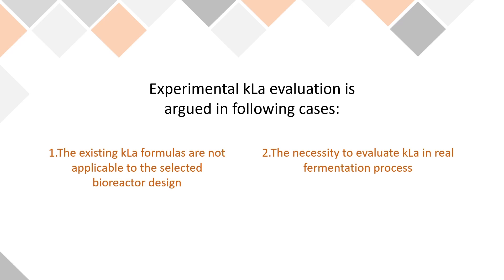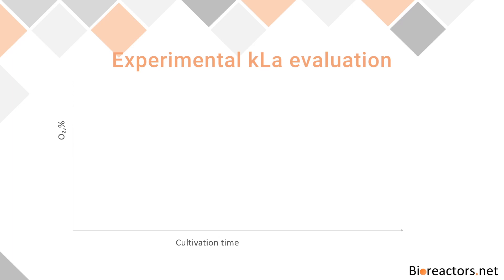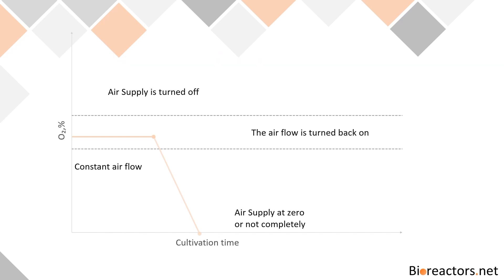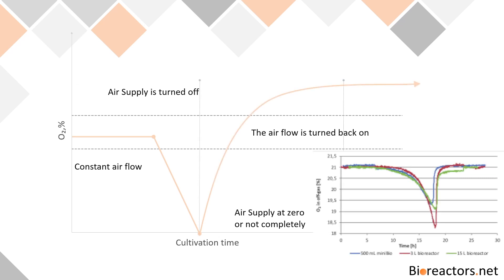For experimental KLA determination methods, the basic approach is to first lower the current oxygen concentration to a certain level. This can be done by supplying nitrogen, which strips oxygen from the medium, or by switching off gas supply during a running cultivation so that microorganism respiration lowers the oxygen concentration. When oxygen concentration reaches that point, gas supply is switched back on and data on oxygen increase versus time is gathered. Using that data, we can estimate the current value of the volumetric oxygen mass transfer coefficient.